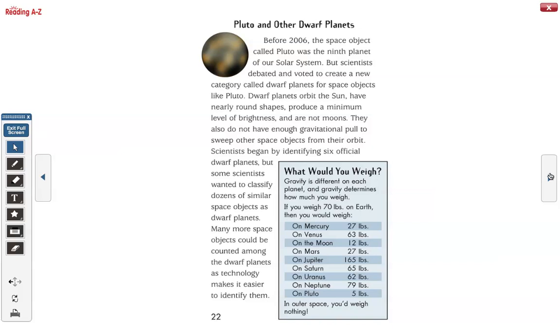What would you weigh? Gravity is different on each planet and gravity determines how much you weigh. If you weigh 70 pounds on Earth, then you would weigh on Mercury, 27, on Venus, 63, on the Moon, 12, on Mars, 27, on Jupiter, 165, on Saturn, 65, on Uranus, 62, on Neptune, 79, on Pluto, 5. In outer space, you would weigh nothing.